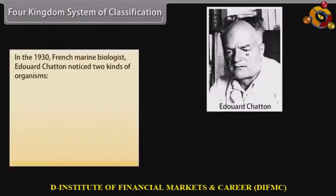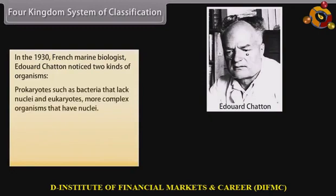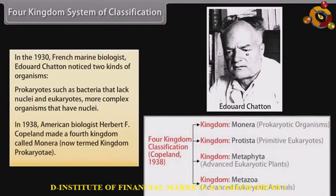Four Kingdom System of Classification: In the 1930s, French marine biologist Edward Chatton noticed two kinds of organisms — prokaryotes, such as bacteria that lack nuclei, and eukaryotes, more complex organisms that have nuclei. In 1938, American biologist Herbert F. Copeland made a fourth kingdom called Monera, now termed Kingdom Prokaryote.